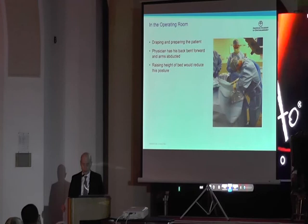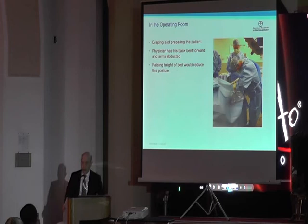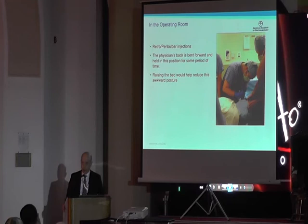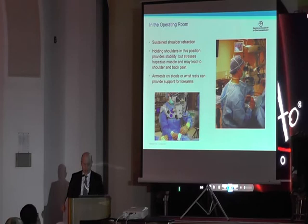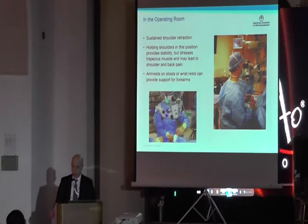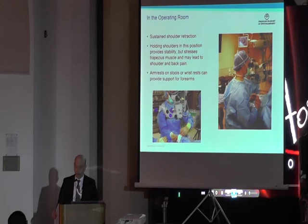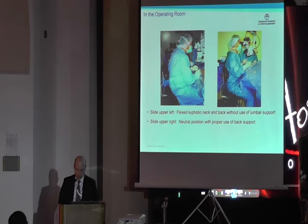It starts with even the draping and prepping — look at the angle on this doctor and try to lift up the table to reduce the flexion. Peri-roll bar blocks present the same issues. The key element is that the eyepieces of your microscope need to be set slightly below the sitting eye height. Try to use a wrist rest — without a wrist rest, that creates significant issues with shoulder retraction, holding the shoulders in the same position for a long period of time. Tilt your microscope to allow a much more neutral position.